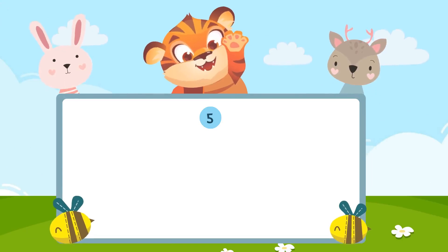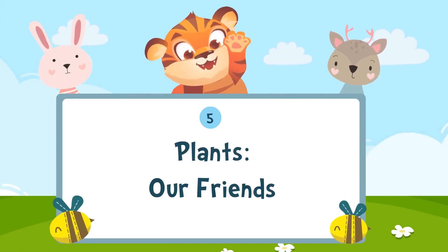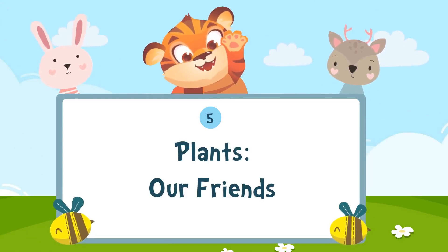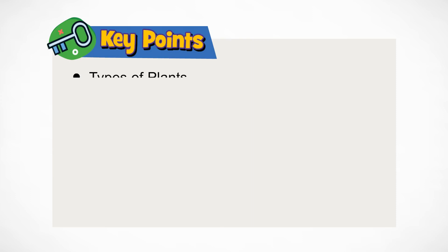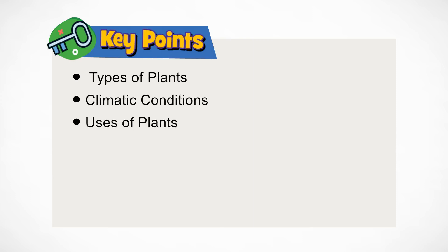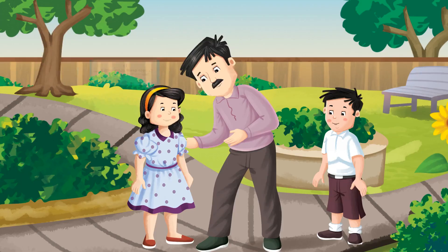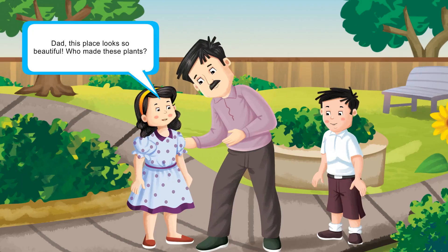Chapter 5: Plants, our friends. Key points: Types of plants, climatic conditions, uses of plants, some unusual plants.